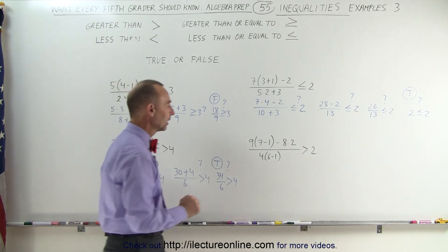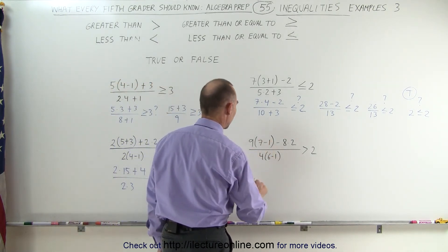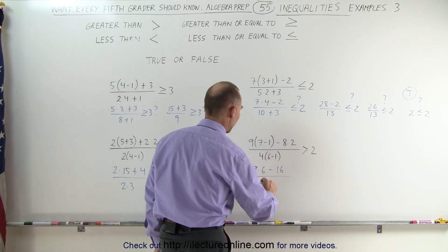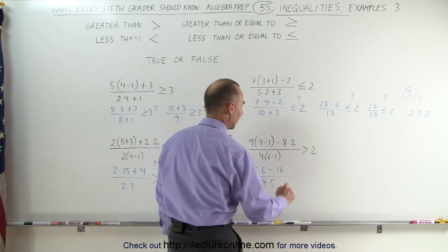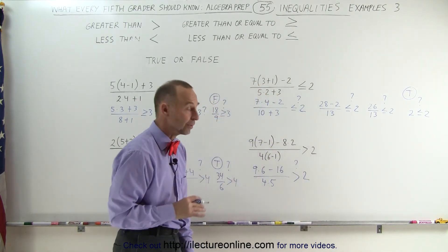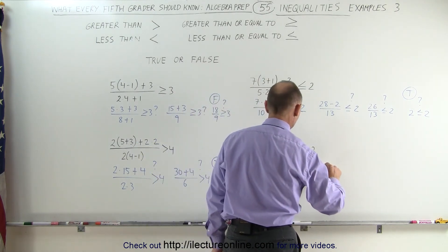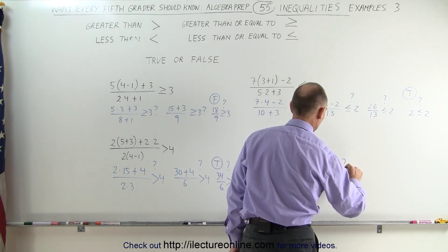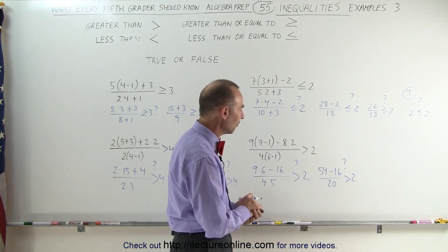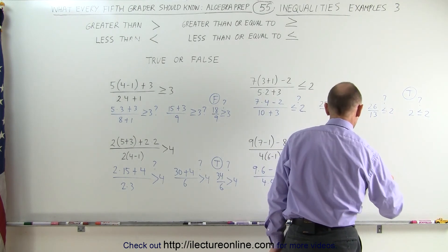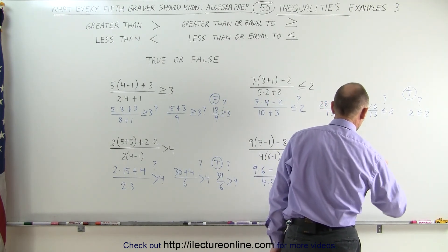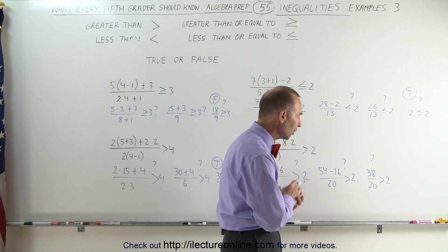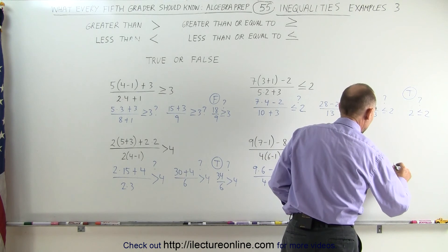Finally, our last example: 9 times (7 minus 1). Working out the parentheses first gives us 9 times 6, minus 8 times 2, which is 16, divided by 4 times (6 minus 1), which is 4 times 5. Is that greater than 2? Continuing: 9 times 6 is 54, giving 54 minus 16, divided by 4 times 5, which is 20. Is that greater than 2? Subtracting 16 from 54 gives 38. Is 38 divided by 20 greater than 2? I know that 40 divided by 20 is 2, so 38 divided by 20 must be smaller than 2 — it's not greater than 2. That makes this a false statement.